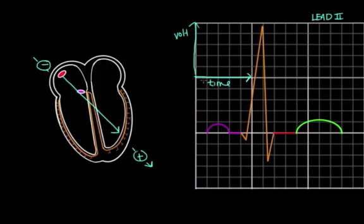So voltage is on the y-axis, time is on the x-axis. Every small box running in the x-axis, or time direction, represents 0.04 seconds.